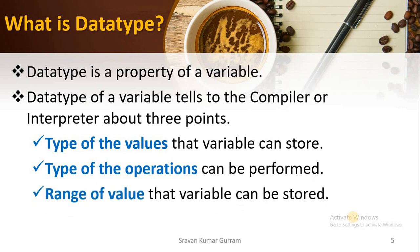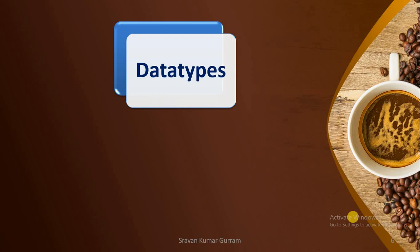Third point is the range of values that a variable can store. We have different data types, and based on your requirement you must select which data type is appropriate. Suppose you want to store a two-digit number — we have one data type. If you want to store a five-digit number, you must select another appropriate data type. If you declare a small data type sufficient to store two digits but try to store a ten-digit number, that will raise an error, because the range of the variable is decided based on the data type only.